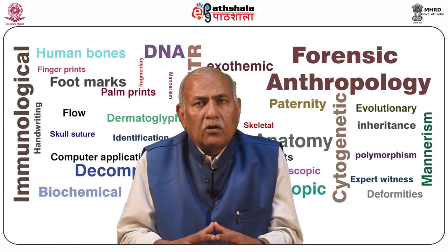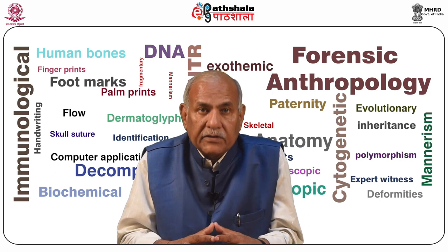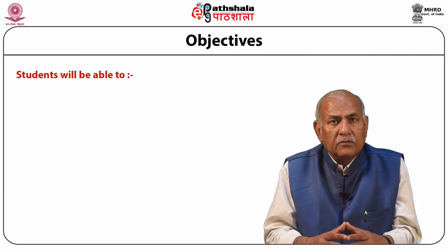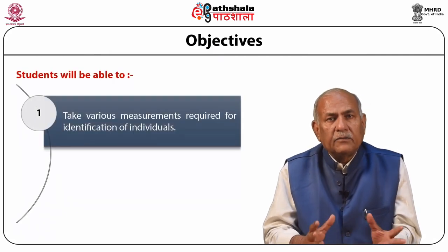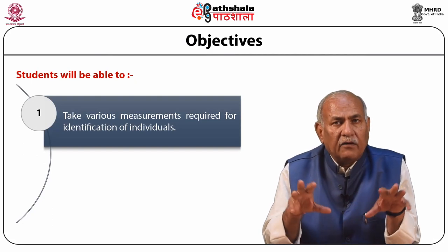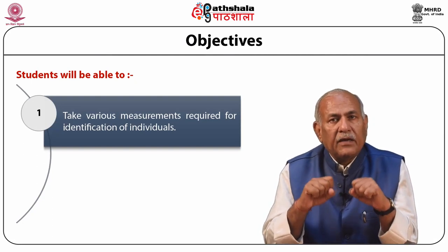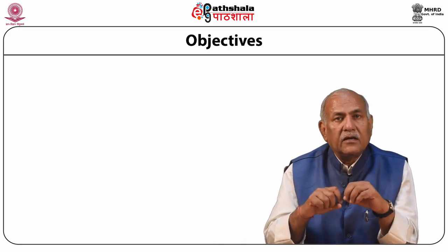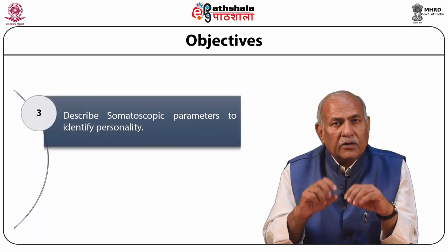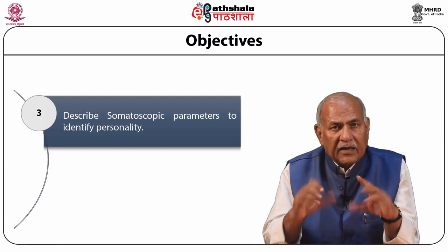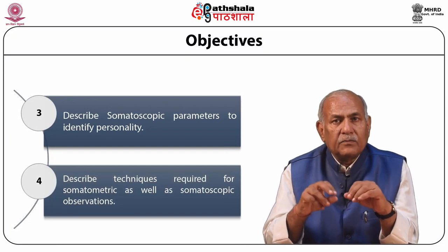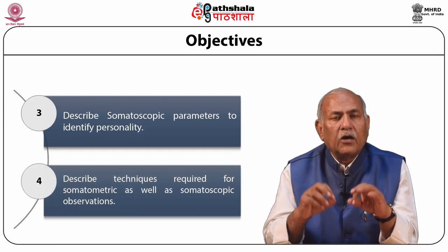Today we are going to talk on the module: identification through somatometric and somatroscopic observations from the paper Forensic Anthropology. The objectives are: first, students will be able to take various measurements required for identification of individuals; second, students will be able to locate landmarks required for the measurements; third, students will be able to describe somatroscopic parameters to identify personality; and lastly, students will be able to describe techniques required for somatometric as well as somatroscopic observations.